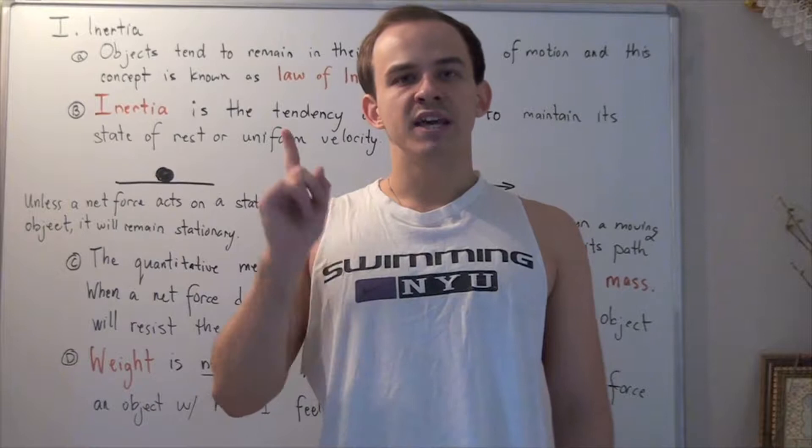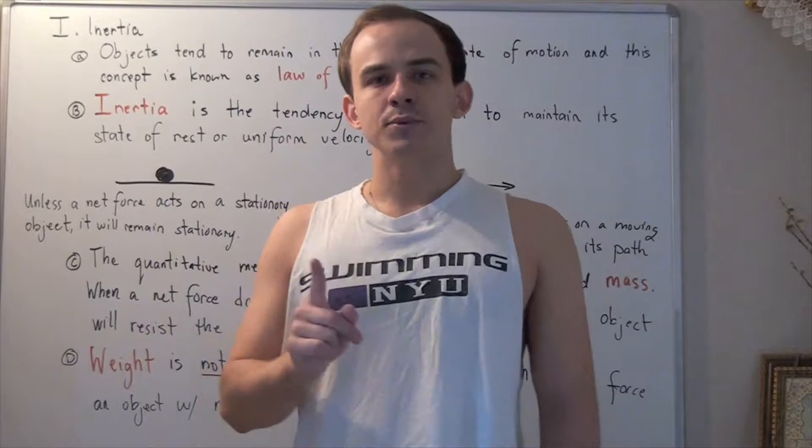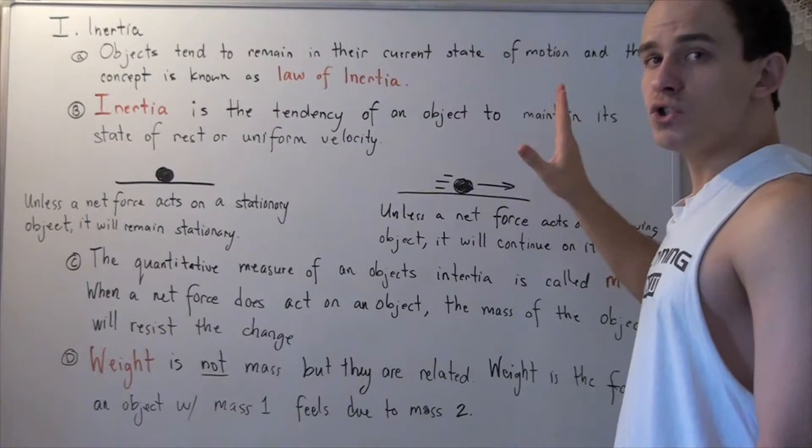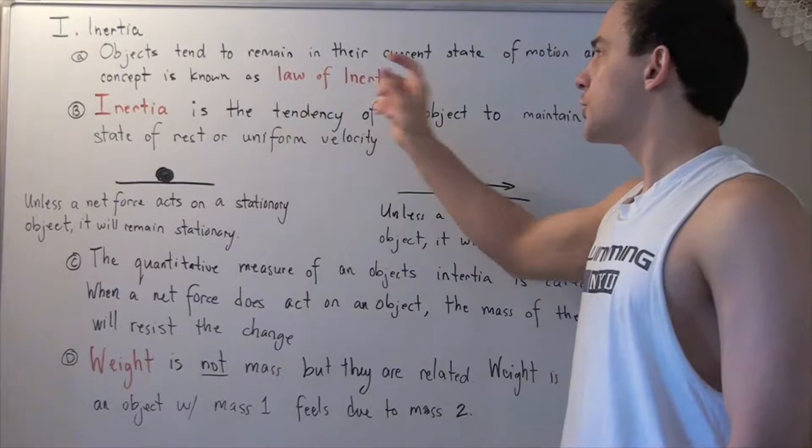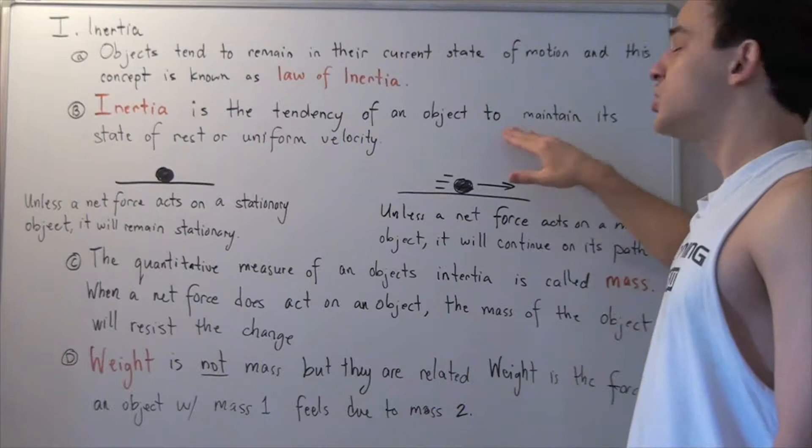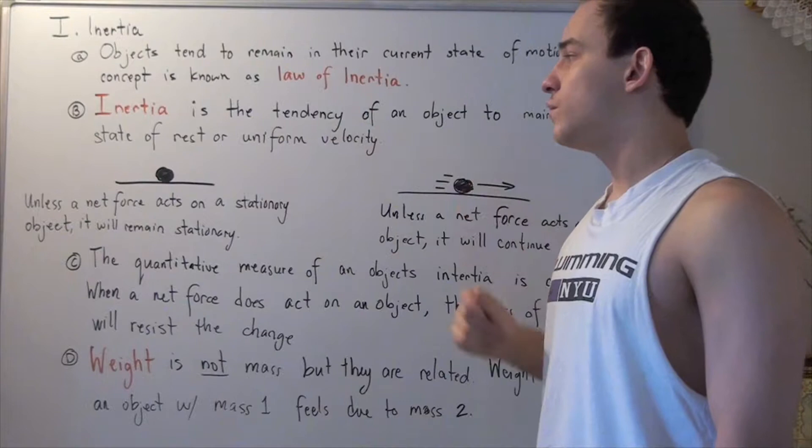Isaac Newton came up with the following idea. He said that unless a net force acts on an object, those objects will tend to remain in their current state of motion or state of rest. He called this concept the law of inertia, and he defined inertia as the tendency of objects to maintain their state of rest or state of uniform velocity or uniform motion.